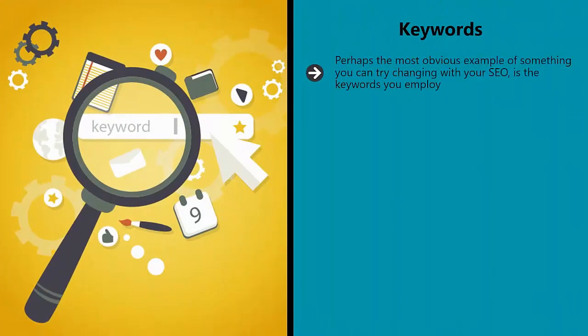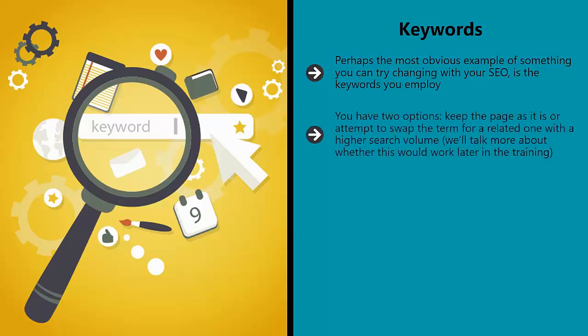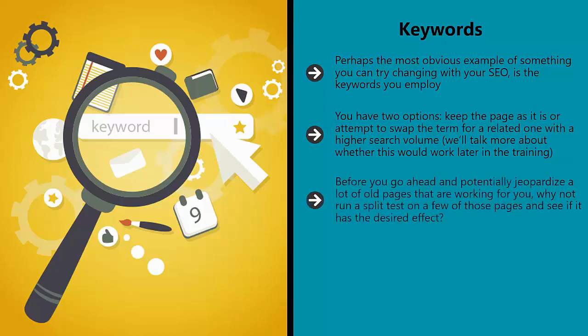Keywords. Perhaps the most obvious example of something you can try changing with your SEO is the keywords you employ. Let's say that you have a few pages that are ranking high for a particular search term, but the problem is that said search term doesn't get a lot of search volume. You have two options: keep the page as it is, or attempt to swap the term for a related one with a higher search volume. Before you go ahead and potentially jeopardize a lot of old pages that are working for you, why not run a split test on a few of those pages and see if it has the desired effect?